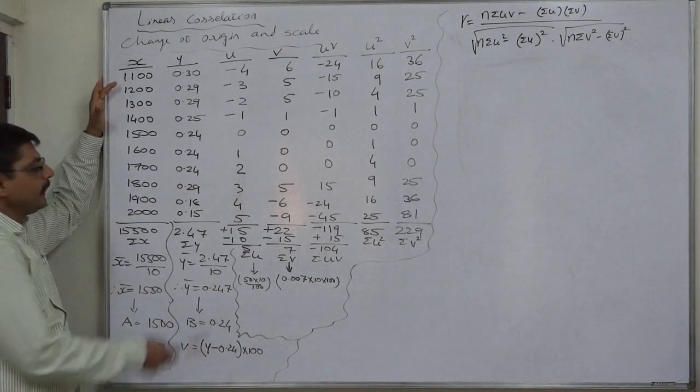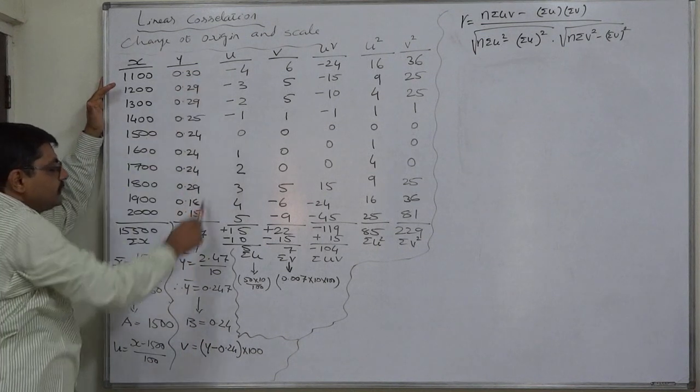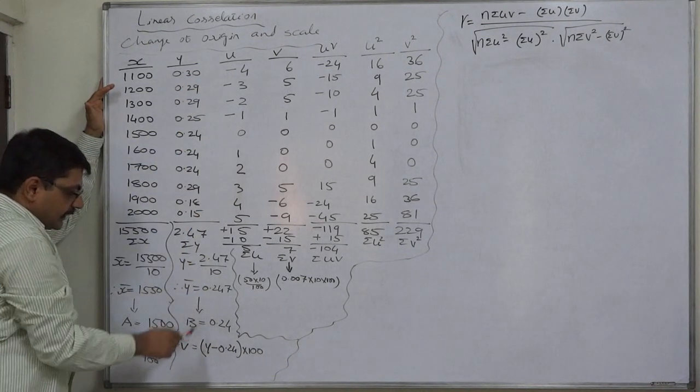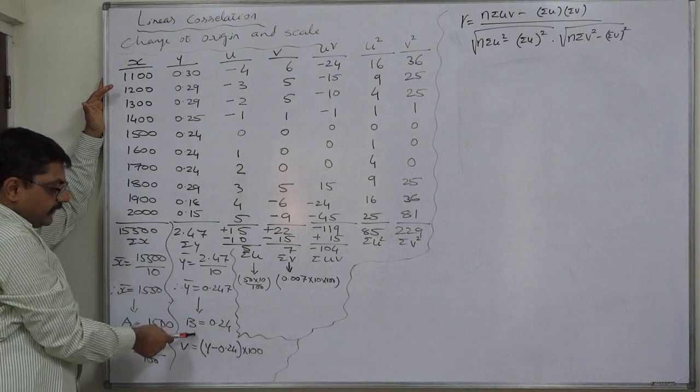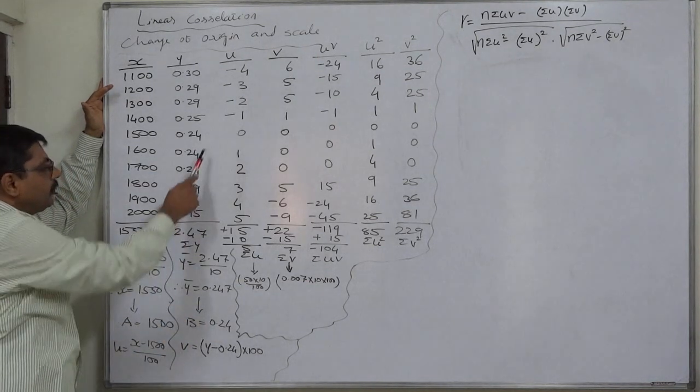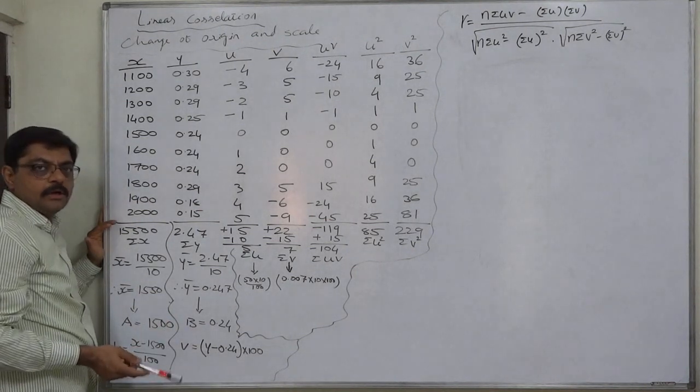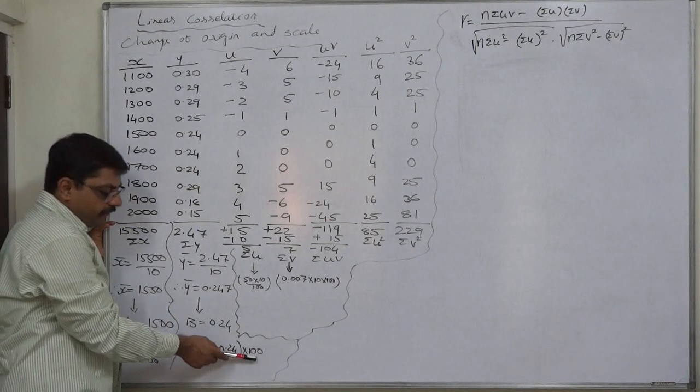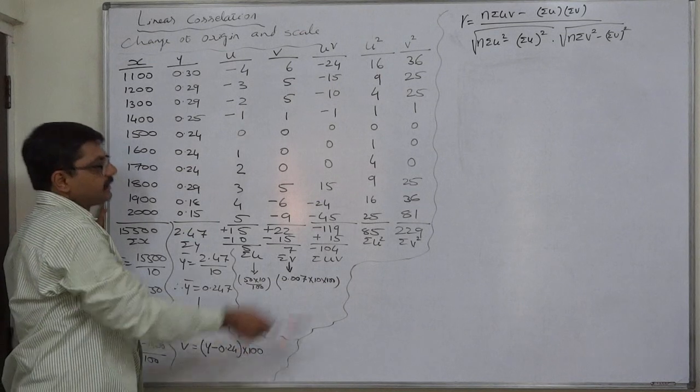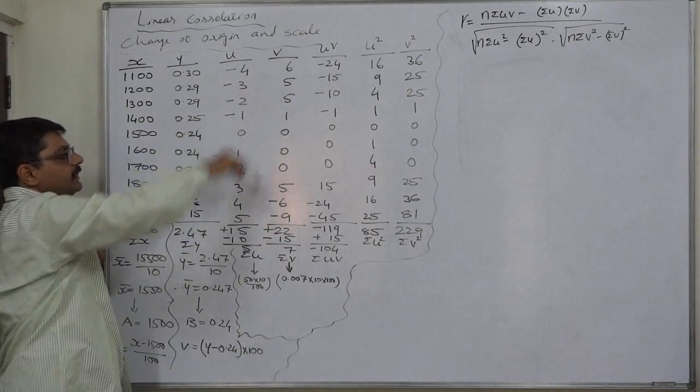Ultimately v will be (y minus 0.24) times 100. Since we have two decimal places, the deviations of original value minus assumed mean will also be in two decimal places. So if we multiply all of them by 100, the values will be very smooth.